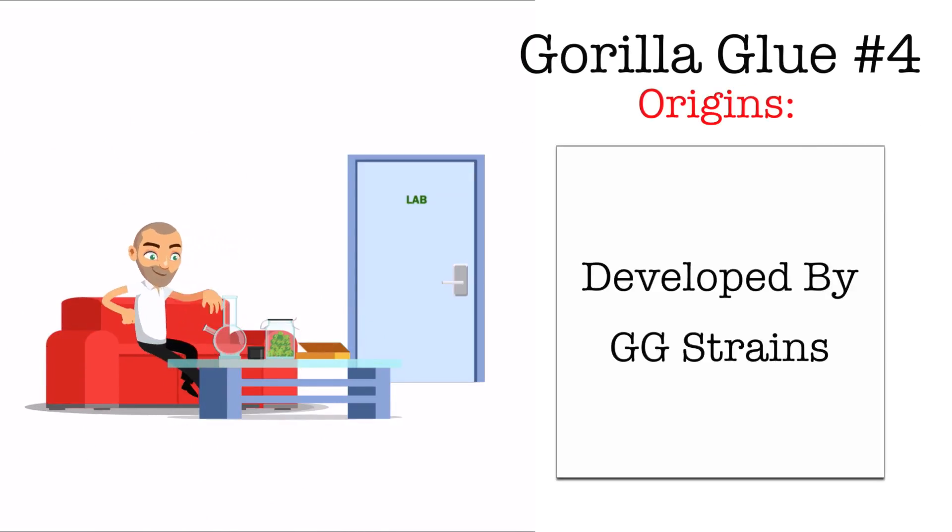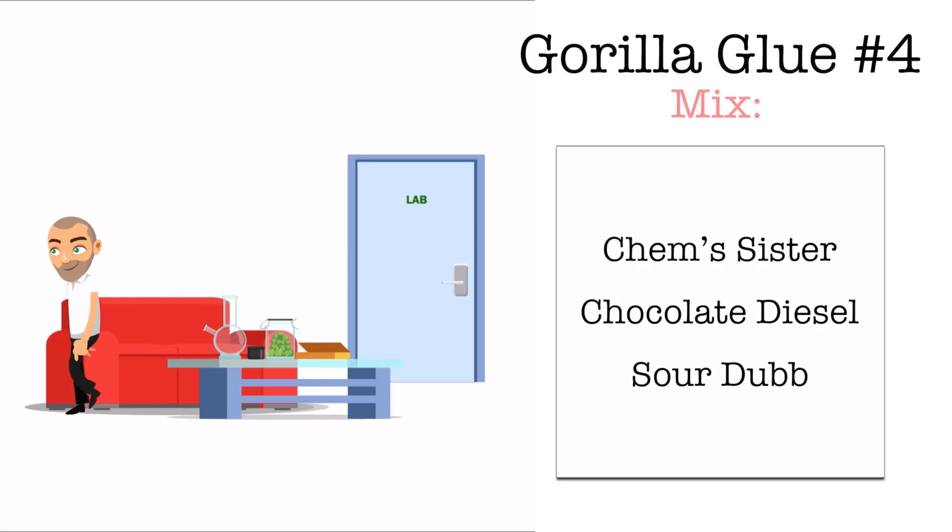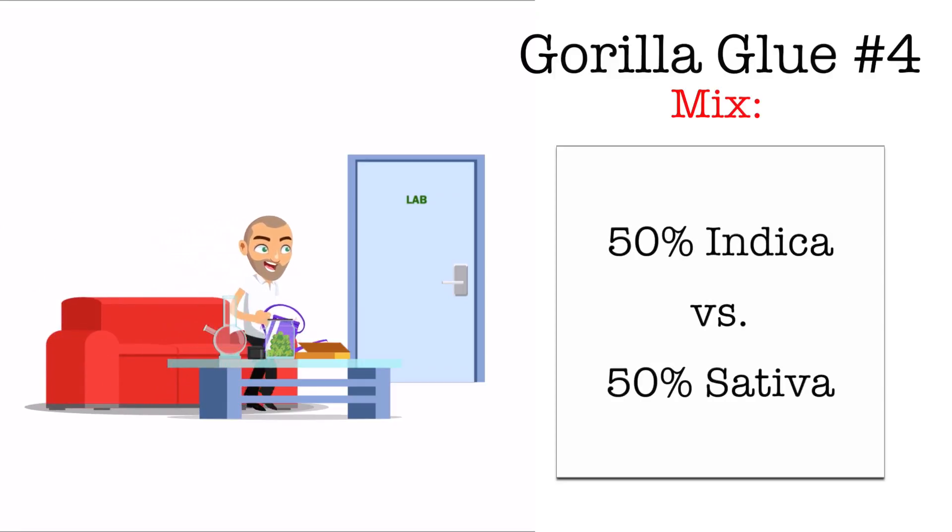Gorilla Glue No. 4 was developed by GG Strains by mixing three potent parent strains. It's a mix between Kemp's Sister, Chocolate Diesel, and Sour Dopp at a ratio of 50% Indica and 50% Sativa.